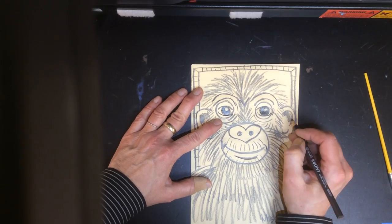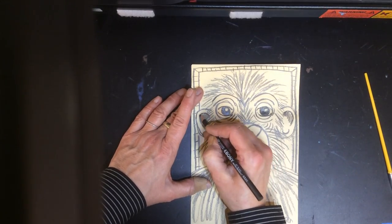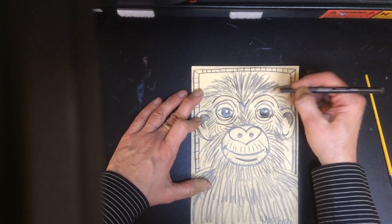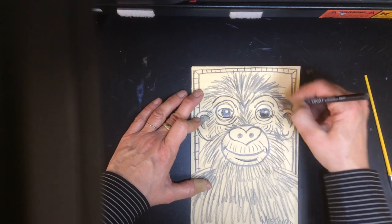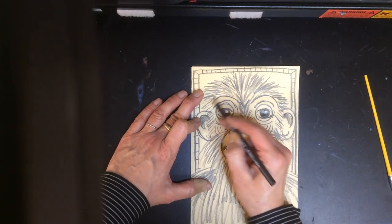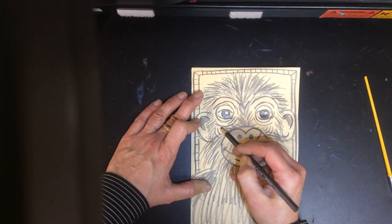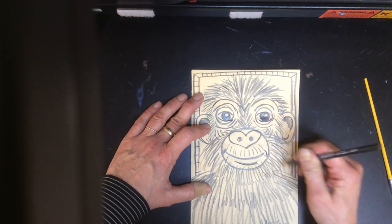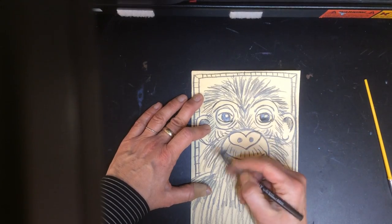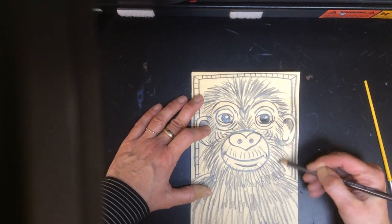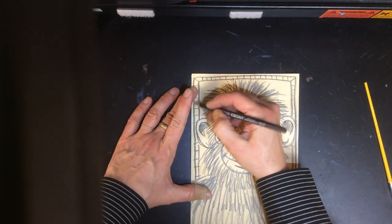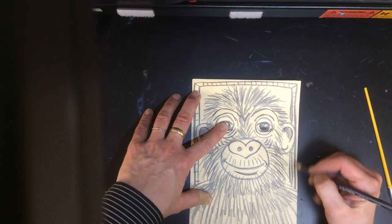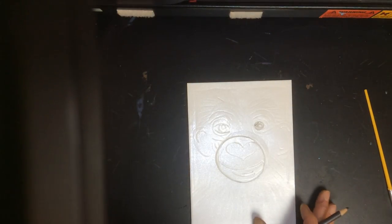This is going to be our printmaking plate, which means we're going to roll ink onto it. The ink will stay on the surface of the styrofoam, and everywhere that I press down, the ink will not go into those grooves. So I want to press pretty hard to make sure that those grooves are deep enough that the ink doesn't fill them up, because then I won't have a very interesting print.